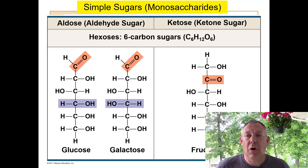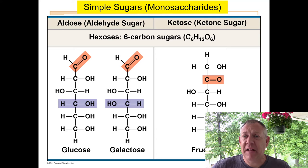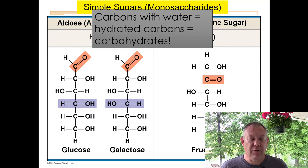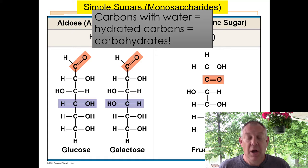If you look closely, on each of these carbons you have an H and an OH attached — each carbon has a hydroxyl functional group. H plus OH is H₂O, water. So you've got hydrated carbons, and that's where you get the term 'carbohydrate' from. Later, if I flash up a diagram and you see a bunch of carbons each with water attached, you'll know that's a carbohydrate.